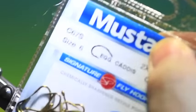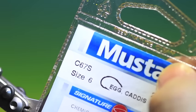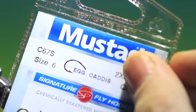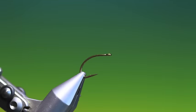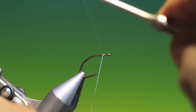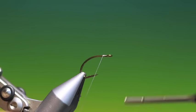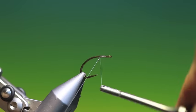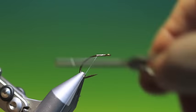So the hook is a Mustard C67 egg caddis size 6. This is a very strong hook. So the tying thread has to be Dyneema. You can do this with GSP, but as many of you will know, I only use Dyneema.